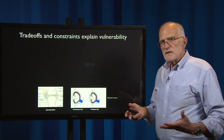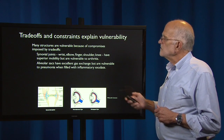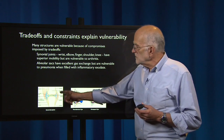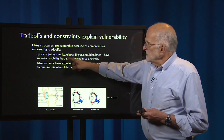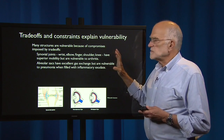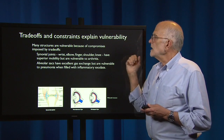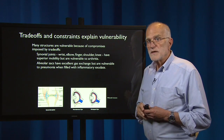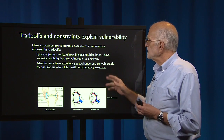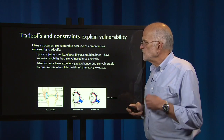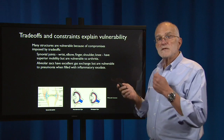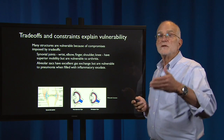Our vulnerability is explained by trade-offs and constraints. Many structures are vulnerable because of compromises imposed by trade-offs. For example, synovial joints — the wrist, elbow, finger, shoulder, and knee are all synovial joints — have superior mobility but are vulnerable to arthritis. Alveolar sacs in our lungs have excellent gas exchange but are vulnerable to pneumonia when filled with inflammatory exudate. So you can see that there are vulnerabilities and costs built into things which are otherwise highly adaptive.